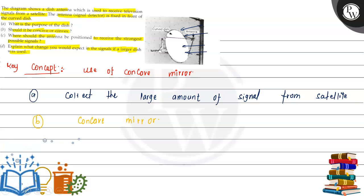Let's discuss the third one. Third one is asking where should the antenna be positioned to receive the strongest signal? You know that if it's a concave mirror, if an object is placed at infinity, then the image is formed at the focus. This means that to utilize the antenna in the best way, where should we place it? It should be placed at the focus.